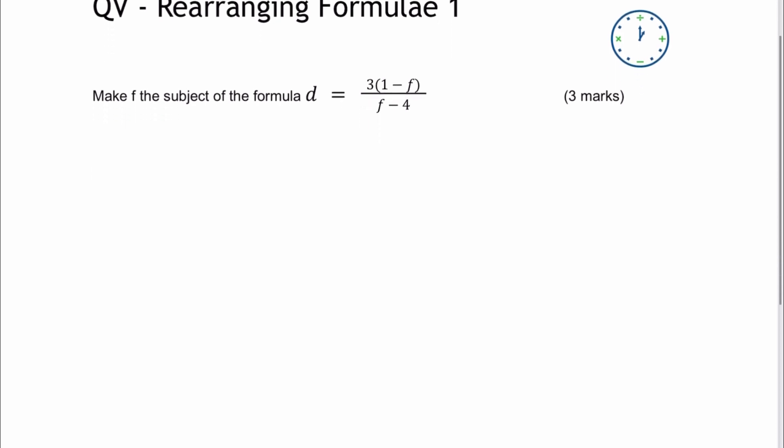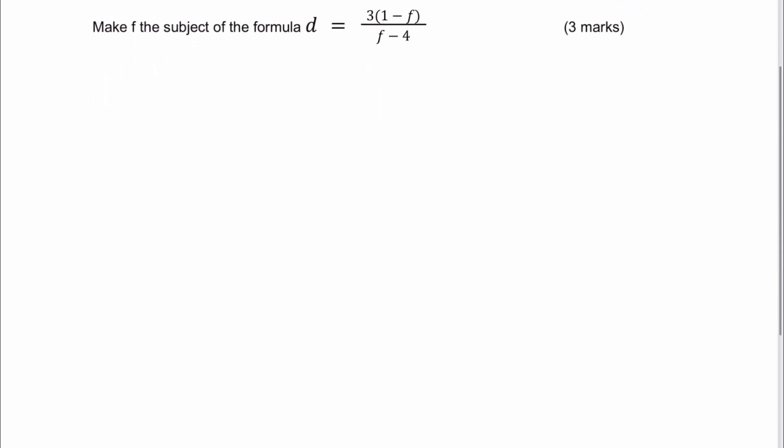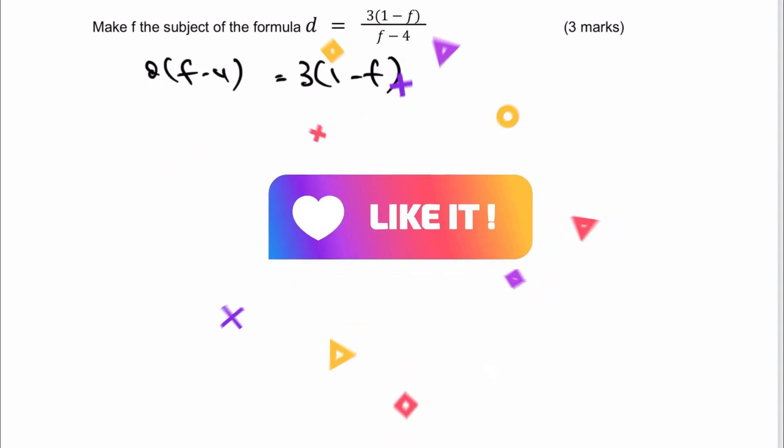What I'm going to do is multiply both sides by f minus 4. So on the left-hand side, I get d times f minus 4, and that equals 3 times 1 minus f. Because effectively, if I multiply both sides by f minus 4, I lose the denominator on the right-hand side.